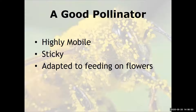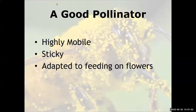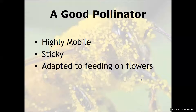A good pollinator needs to be highly mobile, flitting from flower to flower. Stickiness is a good trait. Other things besides being sticky is being hairy — some bees and insects are hairy. Some bees have a special structure called a corbicula, or pollen basket. And they need to be adapted to feeding on flowers — pollen and nectar.